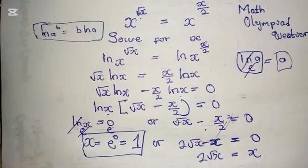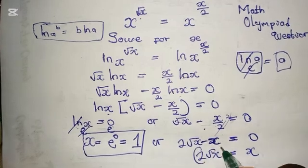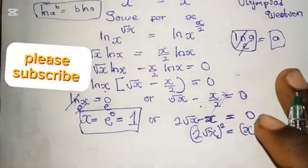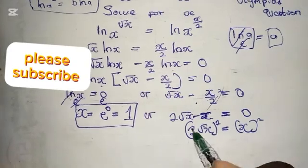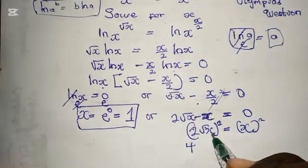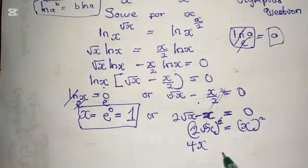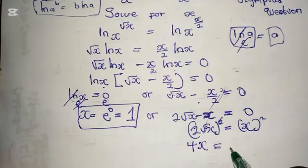So now we have 2√x equals x. We need to eliminate the square root, so let's square both sides. When you square both sides, you have 2 squared which is 4, √x squared cancels to x, and here we have x squared.